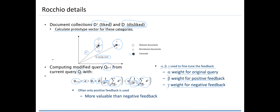Research shows that often only positive feedback is used because it is more valuable than negative feedback. Even though you can distinguish between like and dislike, at the end only positive feedback will be used, since we want to recommend positive items. That's why people often prefer to use only the positive feedback in the Rocchio method.